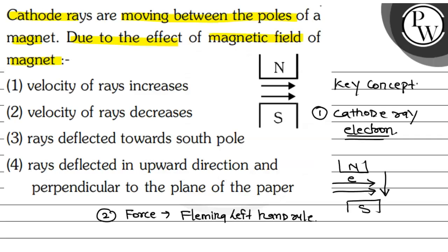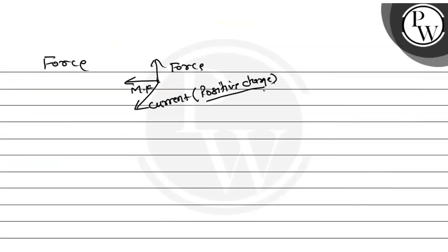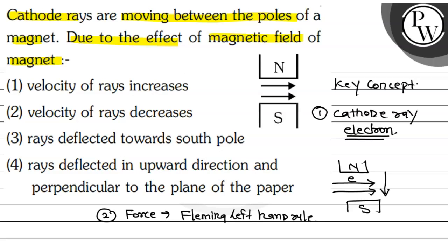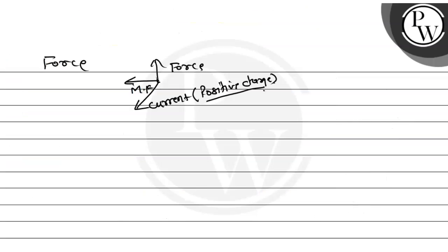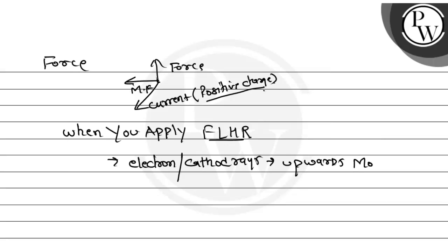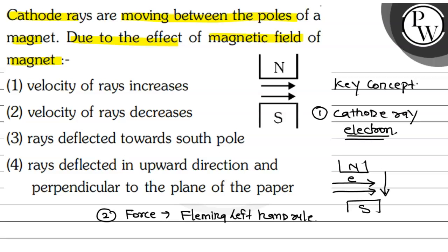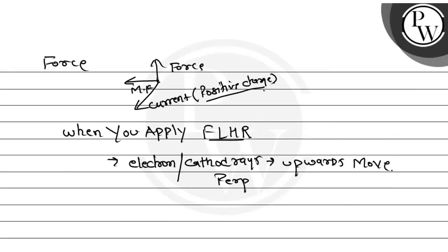So you can see the electron in this direction, towards right. This means the direction of the electron, you should take opposite direction. And the magnetic field is moving north to south. So when you apply the Fleming's left hand rule, the electron has been moving upward direction and perpendicular to the plane of the paper. What is the same thing? Perpendicular to the plane of the paper.